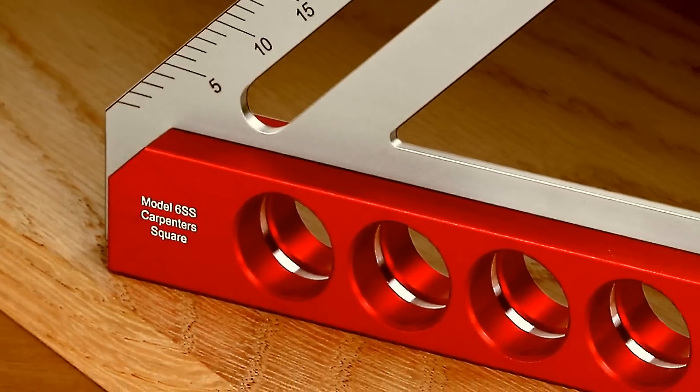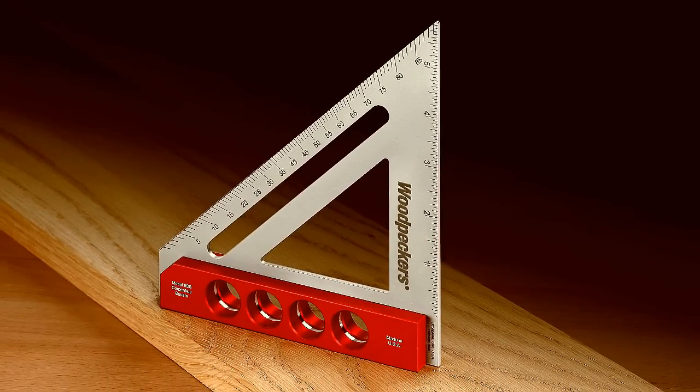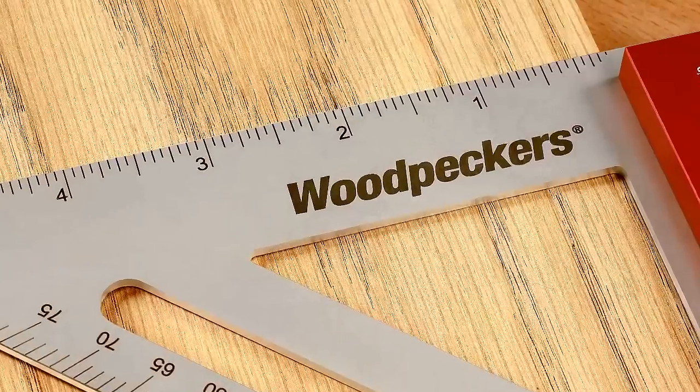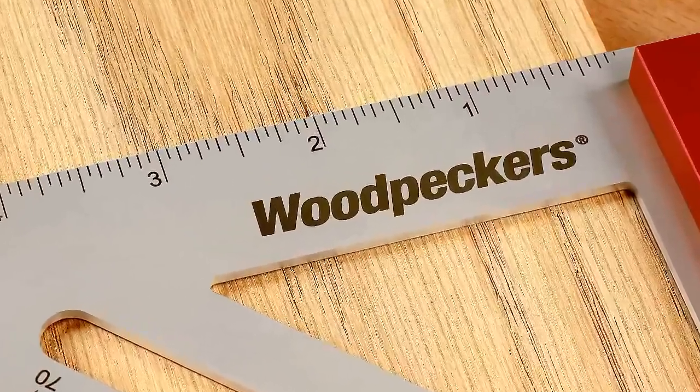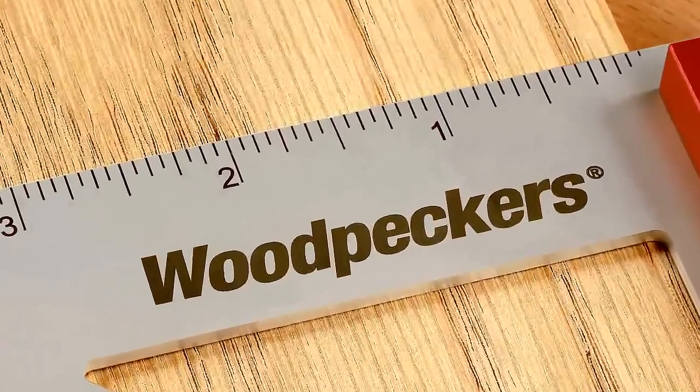Our new carpenter square is not only rugged with impressive heft, but it's a surprisingly handsome tool. The stainless steel blade is bead blasted to produce a low sheen satin finish that makes the scales especially easy to read.